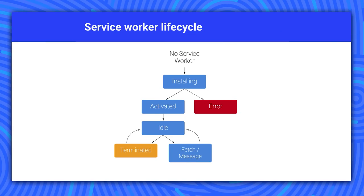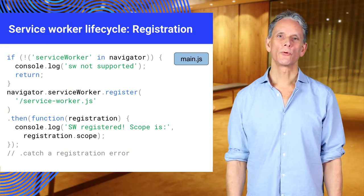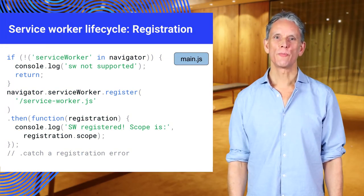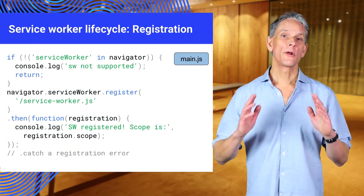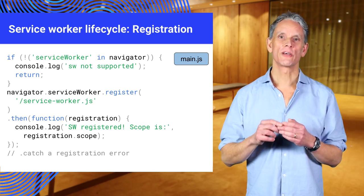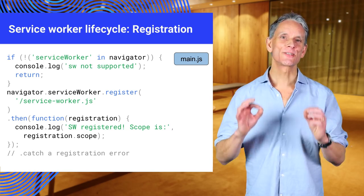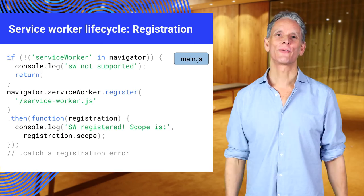Every service worker goes through three steps in its lifecycle: registration, installation, and activation. To install a service worker, you need to register it in your main JavaScript code. Registration tells the browser where your service worker is located and to start installing it in the background.